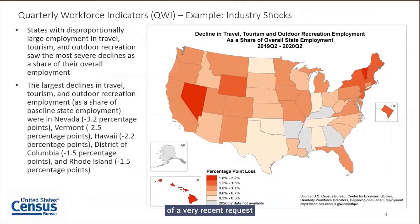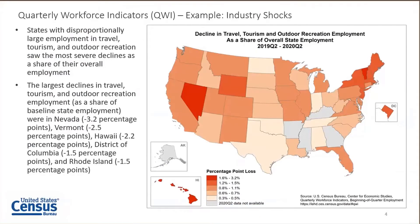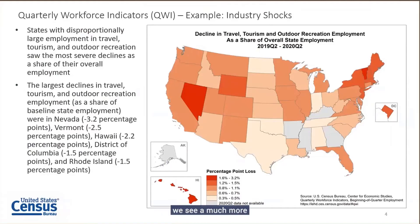Here's an example of a recent request from a member of Congress interested in looking at declines state-by-state in travel, tourism, and outdoor recreation. Using the publicly available quarterly workforce indicator data on beginning-of-quarter employment, we looked at each state and their employment declines as a share of total state employment. This accounts for the fact that states like California and Texas have much larger absolute numbers. We see that states such as Vermont, Nevada, and Hawaii show a much more dramatic impact.